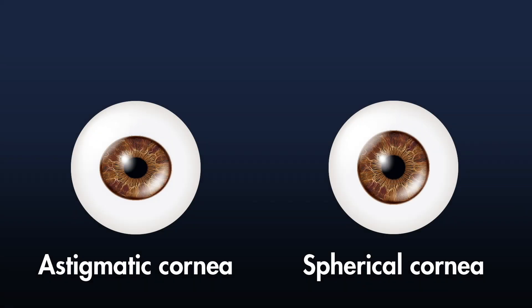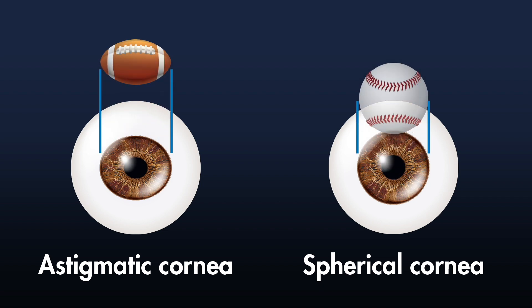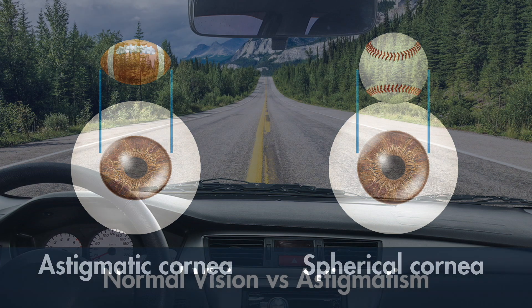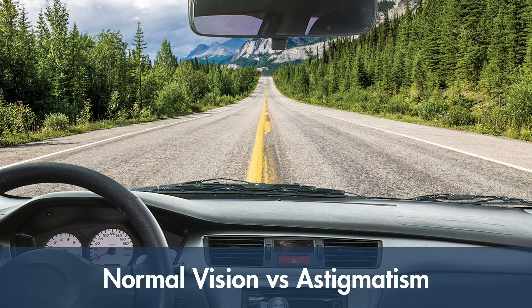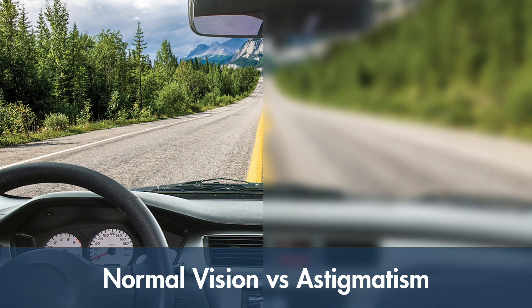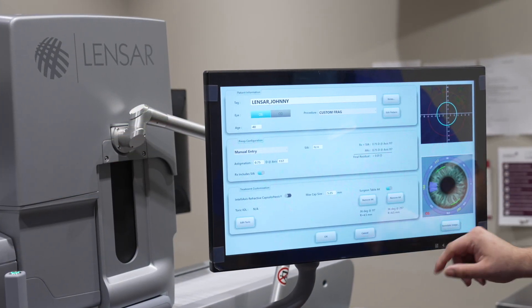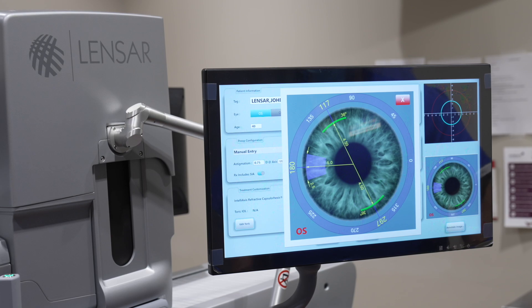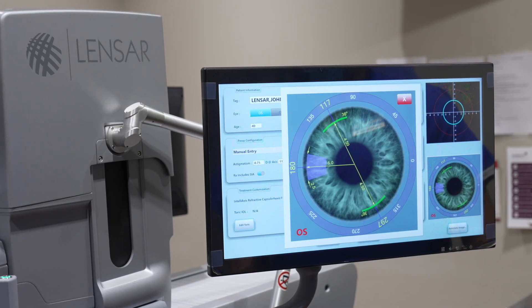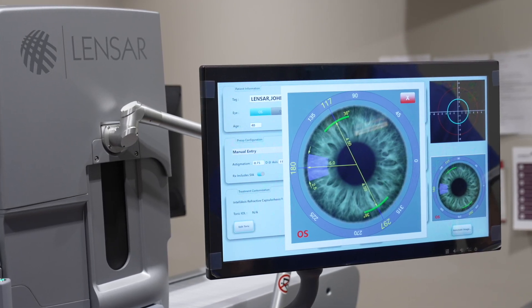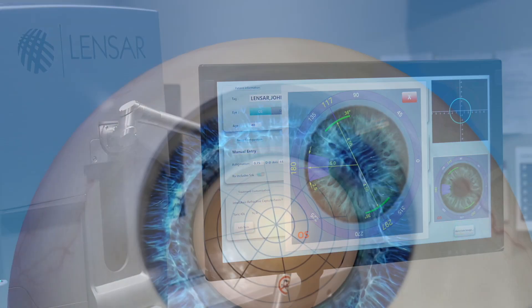Astigmatism is a highly common condition that happens when the eye is shaped like a football instead of a baseball. It affects your near and distance vision, causing blurriness or double vision. Your surgeon can now use the Ally laser to help guide treatment of your astigmatism during your cataract surgery, thanks to the advanced features of the laser system.